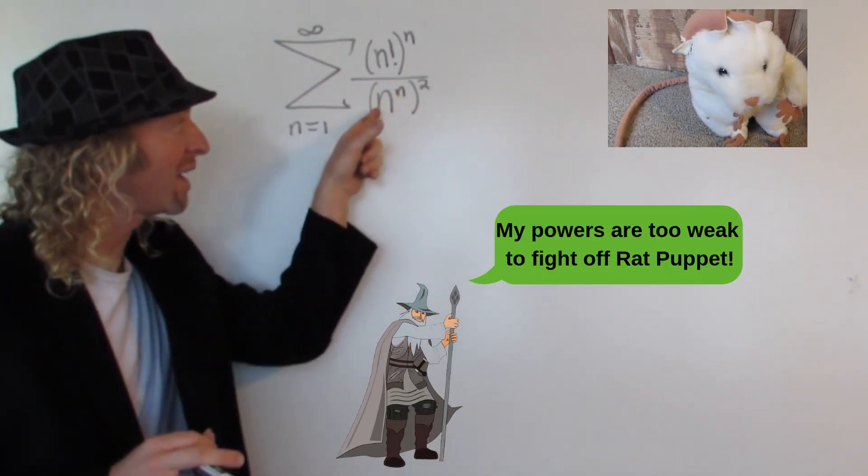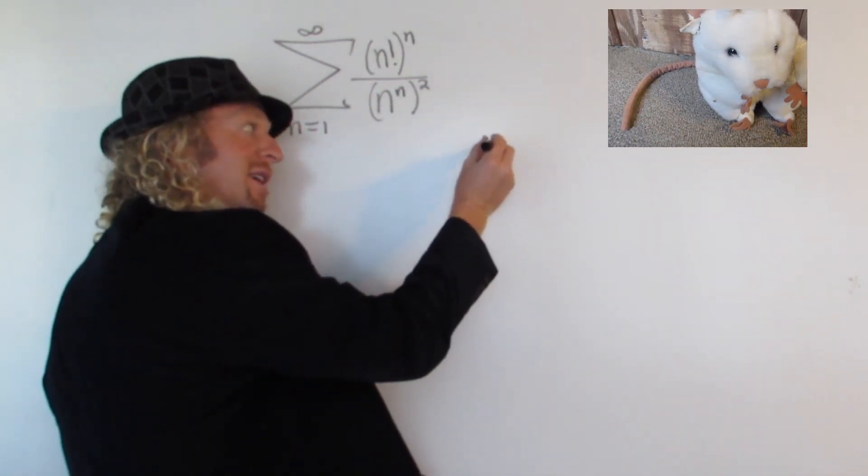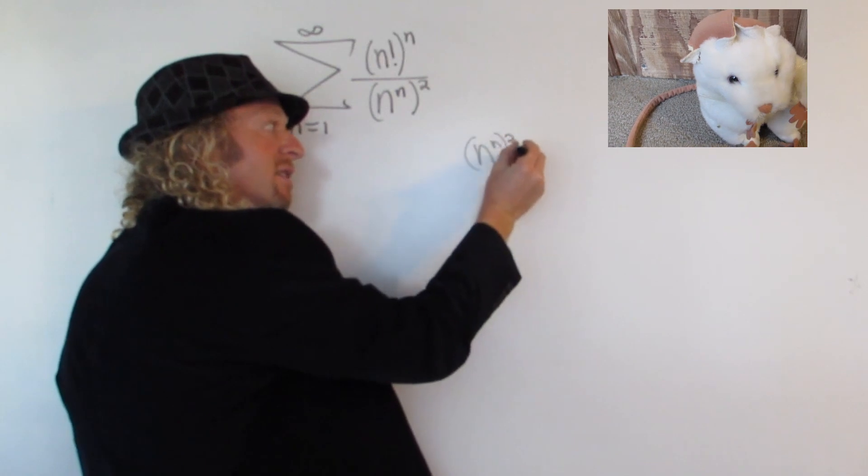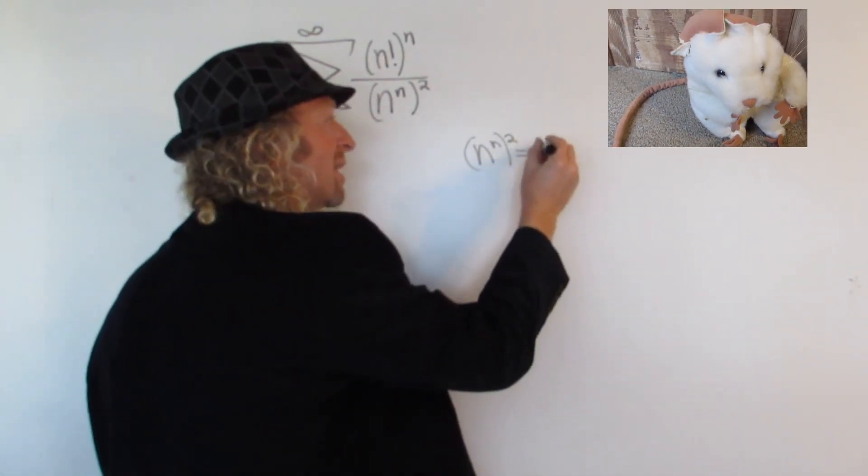You'll notice that here you have n to the n squared. There's a property of exponents that says if you have n to the n squared, this is really n to the 2 times n. You multiply the exponents. This is n to the 2n.